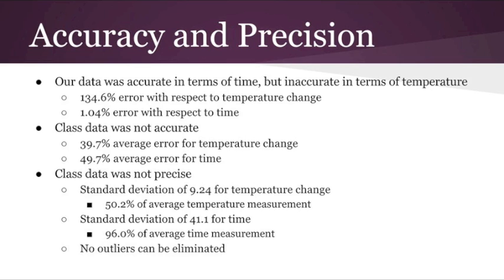The data we obtained was inaccurate with respect to temperature change, but accurate with respect to time. The class dataset was also not very accurate, with a high average error for both temperature change and time elapsed. Additionally, the class data was imprecise, as it had an extremely wide spread and a high standard deviation. However, no outliers can be eliminated with respect to either temperature change or time elapsed.